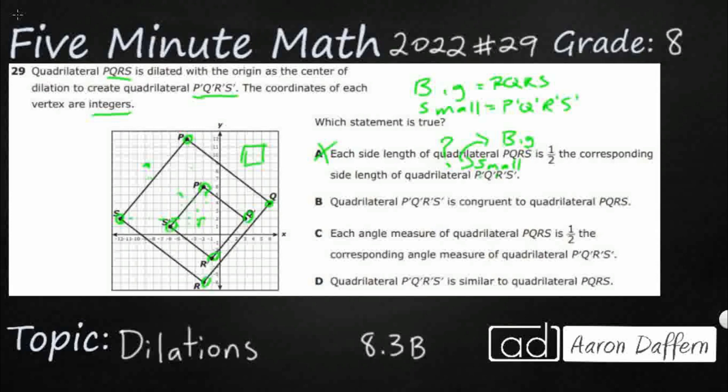So quadrilateral P'Q'R'S', the small one, is congruent to the big one. No. Congruent is same size, same shape, and that is incorrect. It is similar. So that is the same shape, different size. That's what dilation does. Dilation gives you similar shapes, but not congruent shapes.